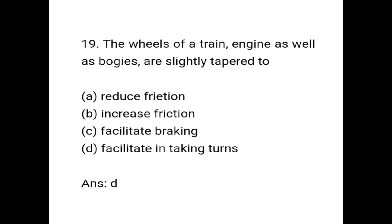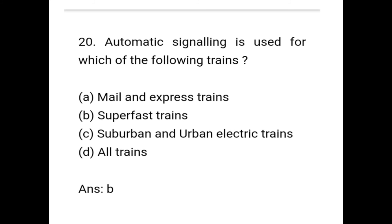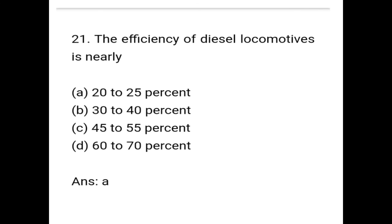The wheel of a train engine as well as bogies are slightly tapered. Correct answer is option D: Facilitated in taking turns. Next question: Automatic signaling is used for which of the following trains? Correct answer is option B: Super fast trains. Question 21: The efficiency of diesel locomotives is nearly — correct answer is option A: 20 to 25%.